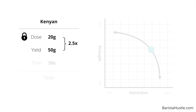Let's see if we can get more strength out of this coffee without lowering the extraction. This rules out yield as a variable — increasing yield would make it even weaker and reducing yield would make it stronger but would also reduce extraction. Yield is not the answer here, so let's lock it in at 50 grams. Instead, let's adjust our time. By grinding finer, the time will be longer and we'll increase extraction and strength at the same time, moving the yield compromise line up and to the right. Remember, yield is locked in, so time is purely a matter of how long it takes us to get to that yield.